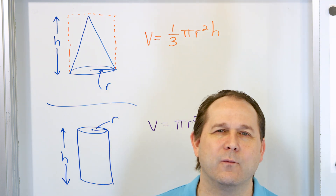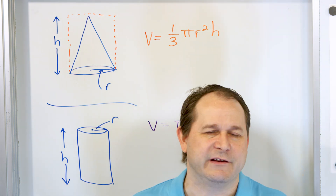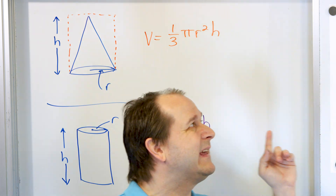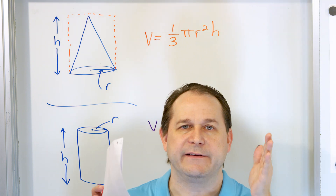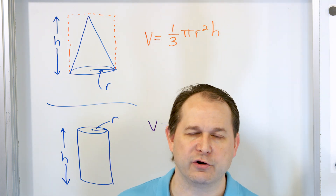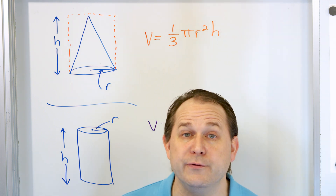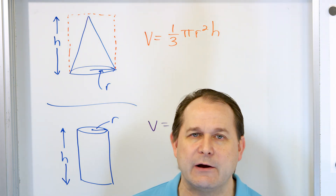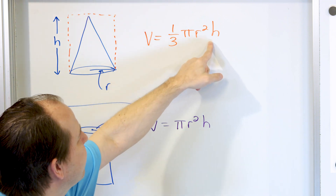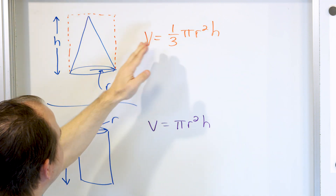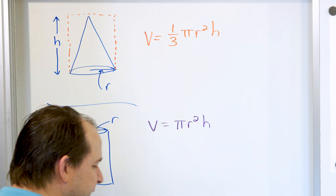Why is it one-third? Why not one-fourth, one-fifth, or one-tenth? It's the geometry of the space we live in. When you get to calculus, you will learn to derive why it's one-third. For now, I'm just telling you it's one-third: take the volume of the cylinder, cut it down to a third of its original size, and that's the volume of the cone that fits inside. When you get into calculus, you actually prove this is true, but we just don't have the tools yet.